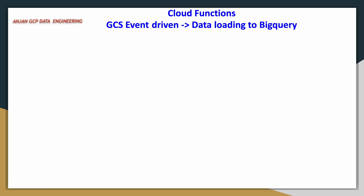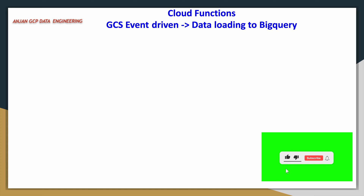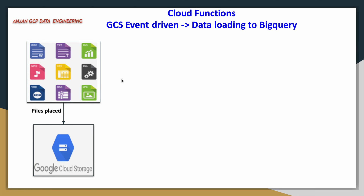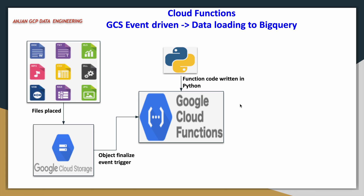We will go directly to the demo. We are concentrating on a use case where if there is a file placed on a Google Cloud Storage bucket — it can be a CSV file, a text file, a JSON file, or any other file — based on that event, there are different types supported: whenever an object is placed and finalized, that is one type of event. If an object is getting archived, that is also an event. In this video, we are concentrating on the object finalized event, and we will write a Cloud Function using Python that reads the metadata of the file and the event.